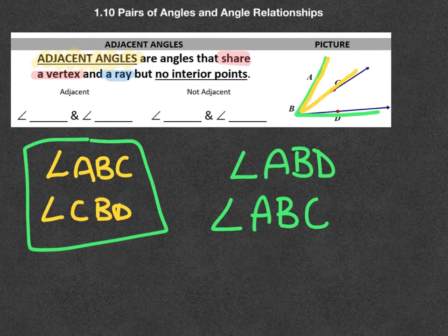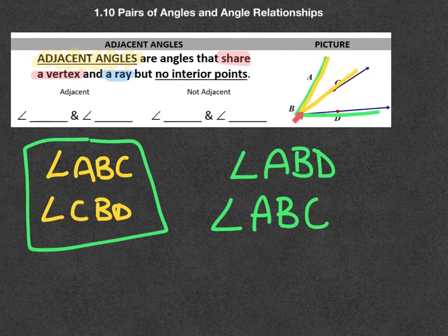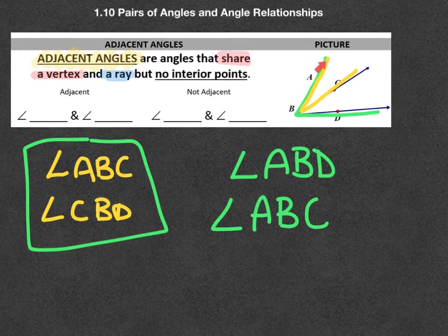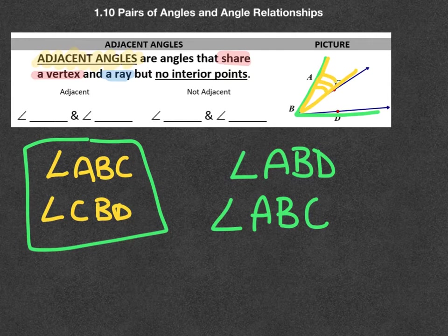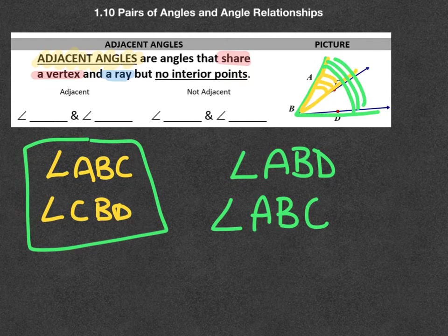They still share the vertex B, yes, they do. They still share a ray. In this case, BA. But where they go wrong is this business of no interior points. We realize that the interior of this guy is in the interior of this guy. And so these are not adjacent.